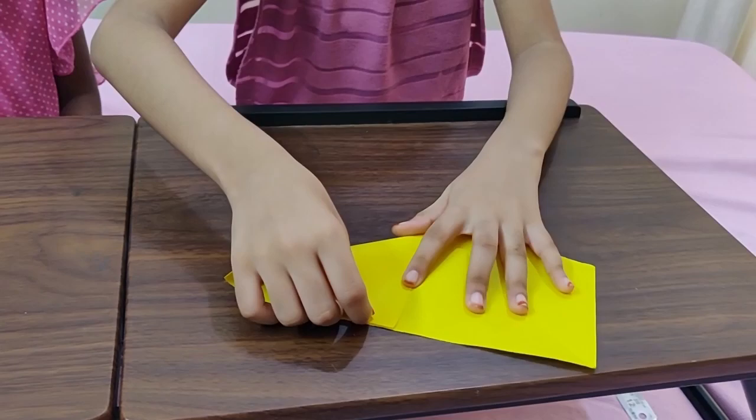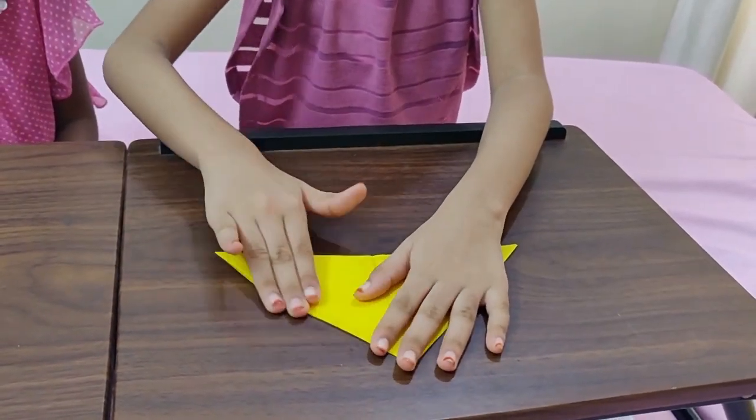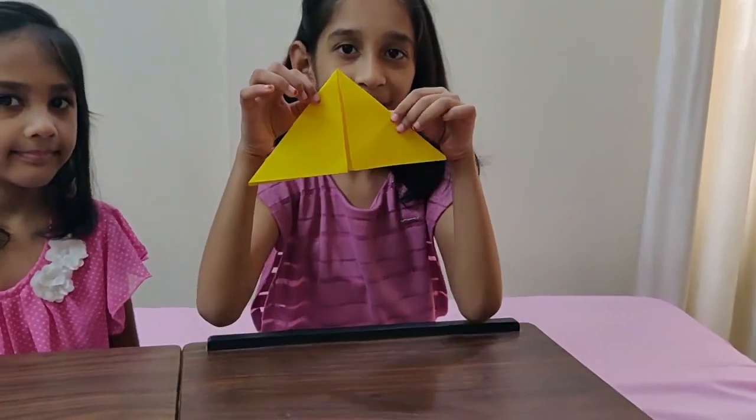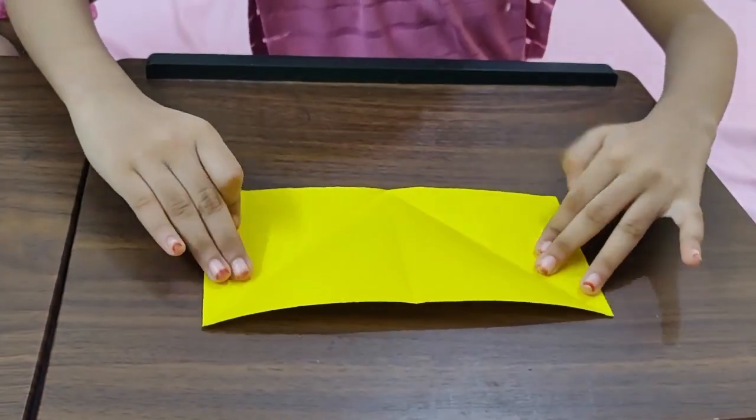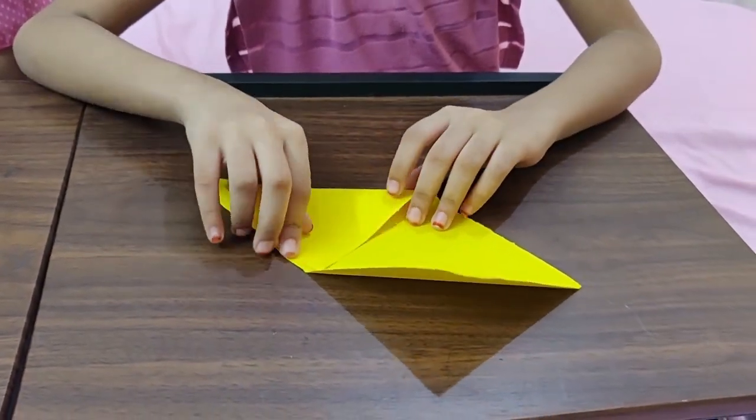Fold both the halves like a triangle. Remove the folds and turn the page upside down and do the same to make cross lines.